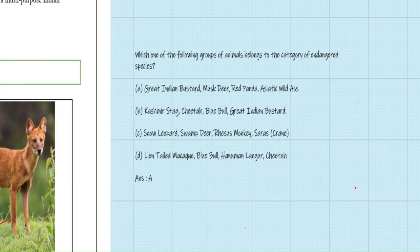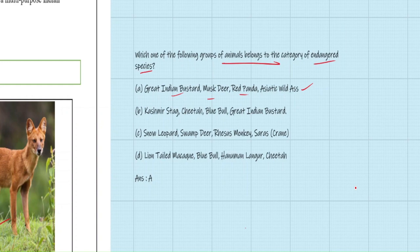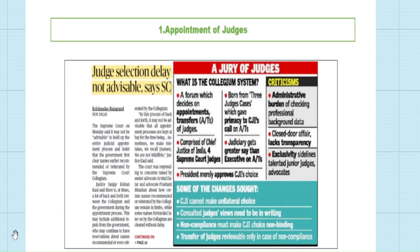Previous year question: Which group of animals belongs to the category of endangered species? The correct answer includes Great Indian Bustard, Musk Deer, Red Panda, and Asiatic Wild Dog — these four species belong to the endangered species category. Moving to the next topic: the appointment of judges. The article mentions that the judiciary is not happy with the government's behavior.